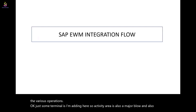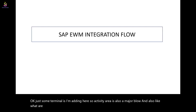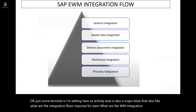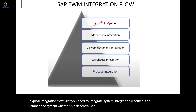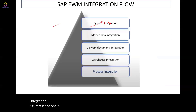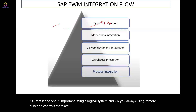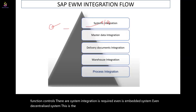What are the integration flows required for EWM? The typical integration flow starts with system integration — whether it is an embedded system or a decentralized system. You need to set up system integration using a logical system and remote function calls. This is required even in embedded and decentralized systems. This is the first step: establish system integration.